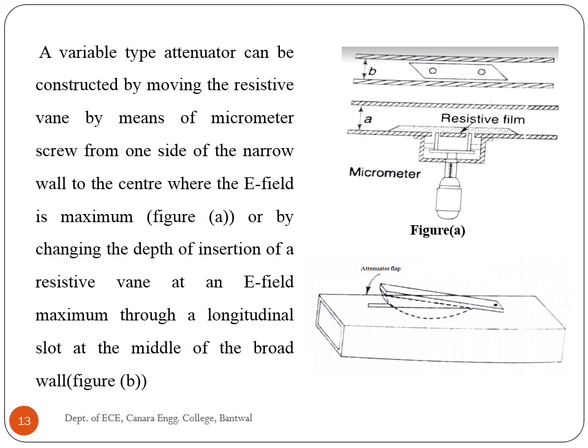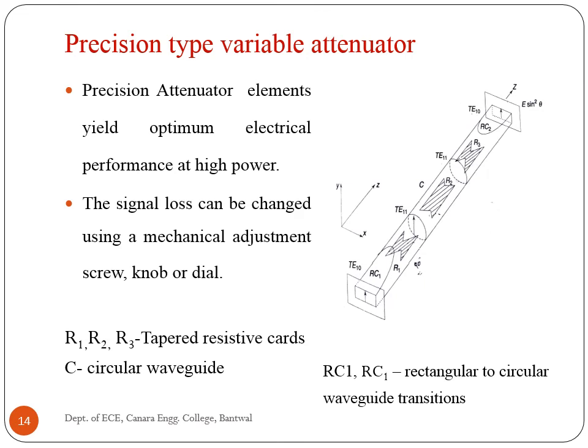The resistance card can be shaped to give a linear variation of attenuation with depth of insertion. Position-type variable attenuator elements yield optimum electrical performance at high power; the signal loss can be changed using a mechanical adjustment screw, knob, or dial. The position-type variable attenuator uses tapered resistive cards R1, R2, R3, a circular waveguide C, and rectangular-to-circular waveguide transitions RC1 and RC2. A precision-type variable attenuator makes use of a circular waveguide section containing a thin tapered resistive card R2, connected to symmetric sections of circular-to-rectangular waveguide tapered transitions RC1 and RC2.